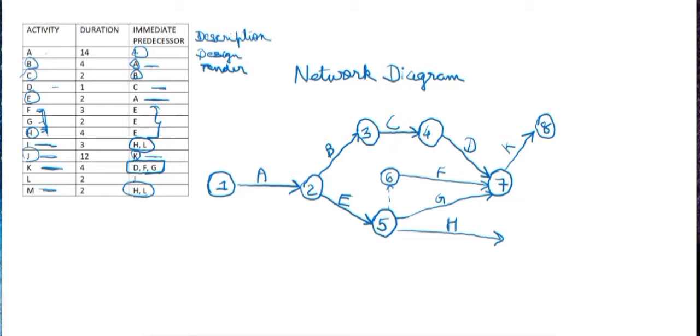That is, we'll take out the next arrow from node 8. This will be activity J, and here it will be node 9.